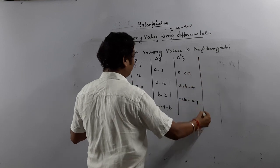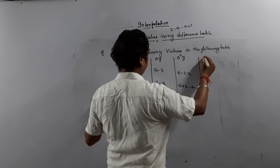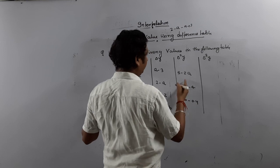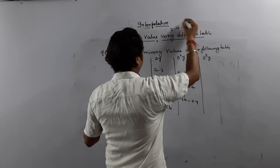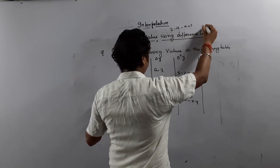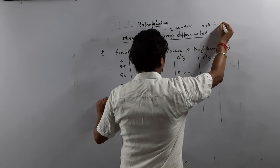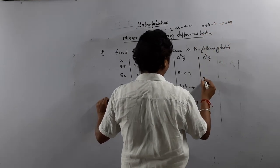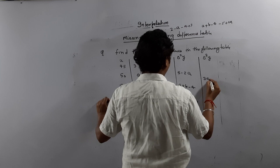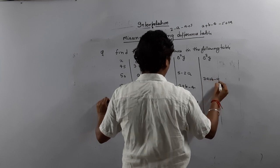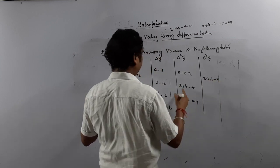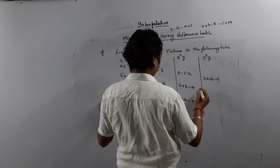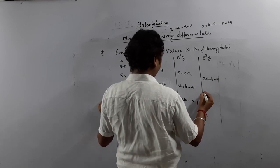Now I am going to calculate the third order difference. Difference of these two: A plus B minus 4 minus 5 plus 2A, so 3A plus B minus 9. What is the difference of these two? We get minus A and then minus 3B.